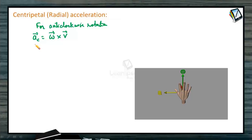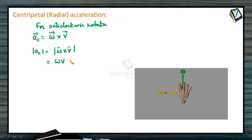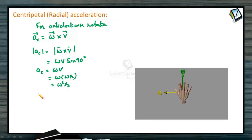This acceleration acts along the radius towards the centre. According to the right-hand rule, ω × V gives us the centripetal acceleration. Since omega and V are always perpendicular, the magnitude of centripetal acceleration equals |ω × V| = ωV sin90° = ωV. Since V = ωR, this becomes ω²R, or writing ω as V/R, it becomes V²/R.